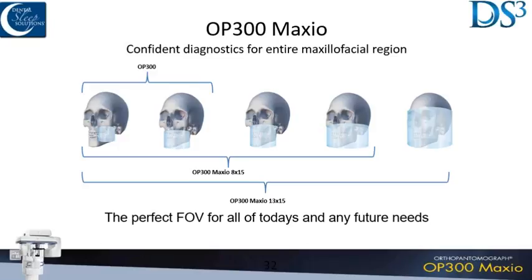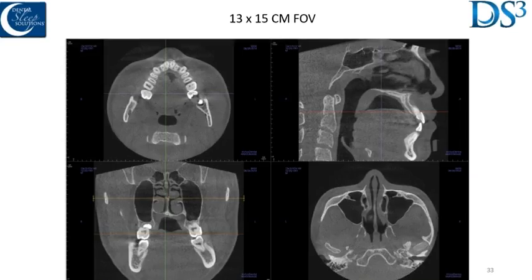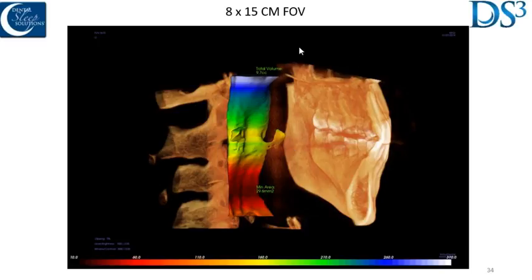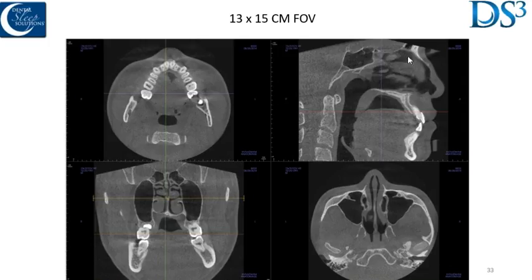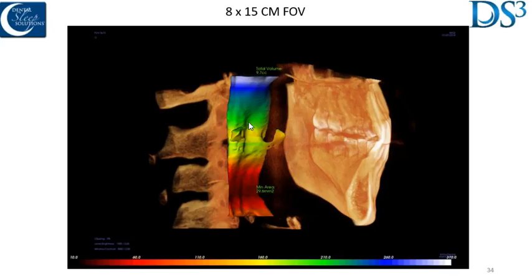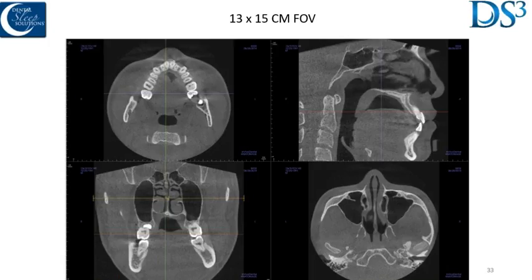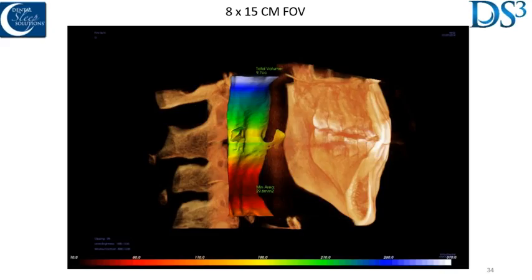With a 13 by 15, I can get everything in one image. With the smaller 8 by 15, you can see we don't have the nose included. If you wanted to see the nose in addition to the lower airway and the TMJs, depending on positioning you'd have to take another image up higher — two separate images as opposed to seeing everything at once. That's really nice for me, for the radiologist, and especially when demonstrating this to patients.